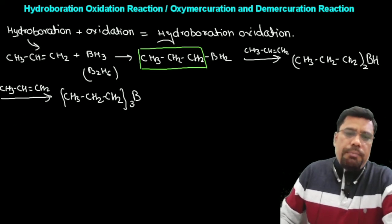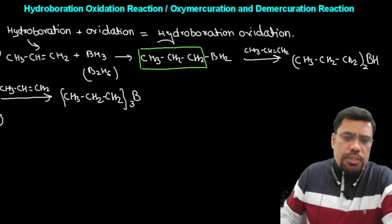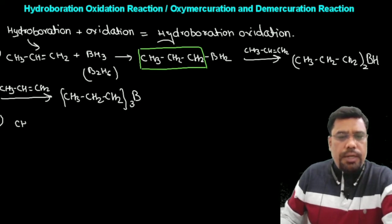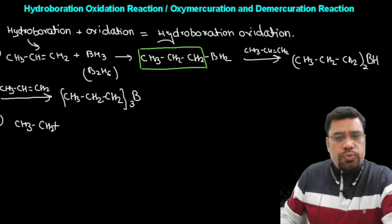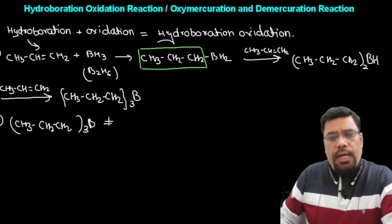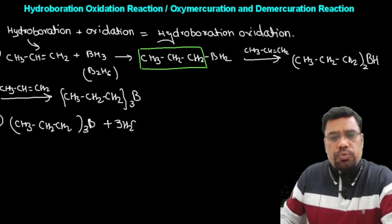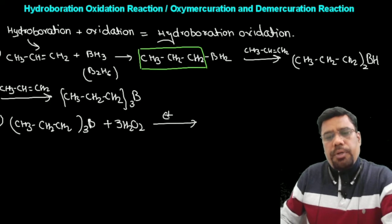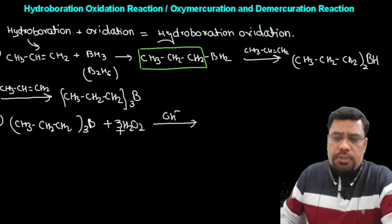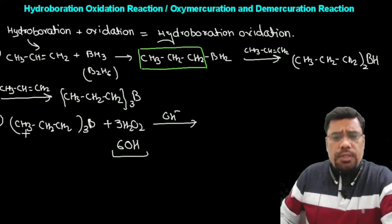यह A part था — hydroboration। अब B part यानि oxidation की बात करते हैं। इस trialkyl borane compound में हमने hydrogen peroxide के तीन molecule यानि 3H2O2 और basic medium में OH⁻ add किए। 3H2O2 में ध्यान से देखें तो 6 OH groups दिख रहे हैं — 6 oxygen और 6 hydrogen।